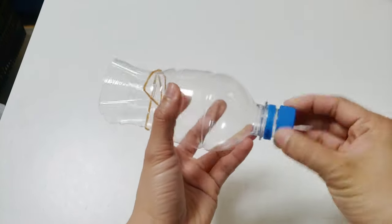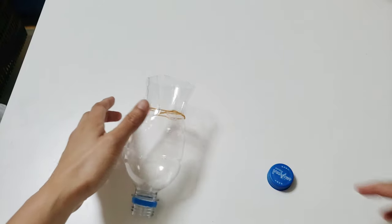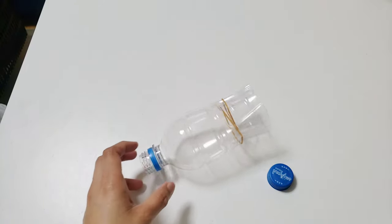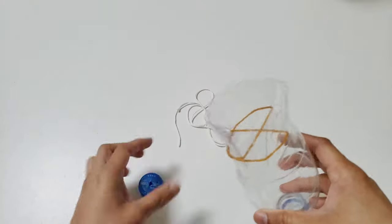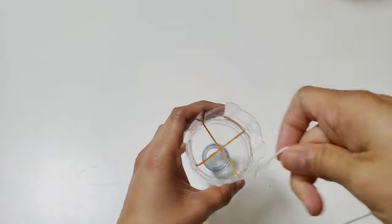After that, make a hole in the bottle lid. Kids, ask help from your parents as this is a little bit difficult for you. Next, tie a yarn to the two rubber bands.